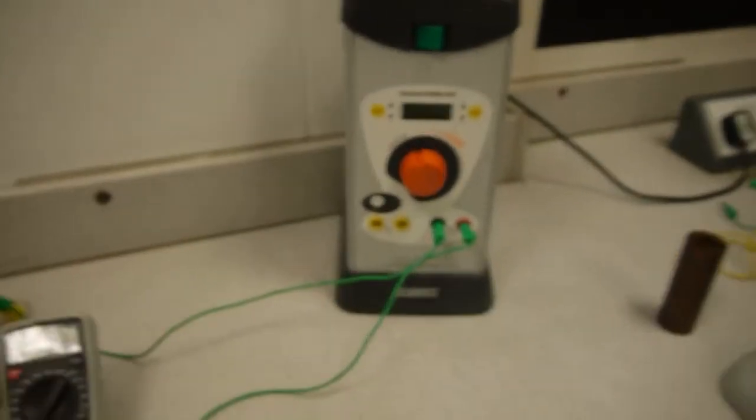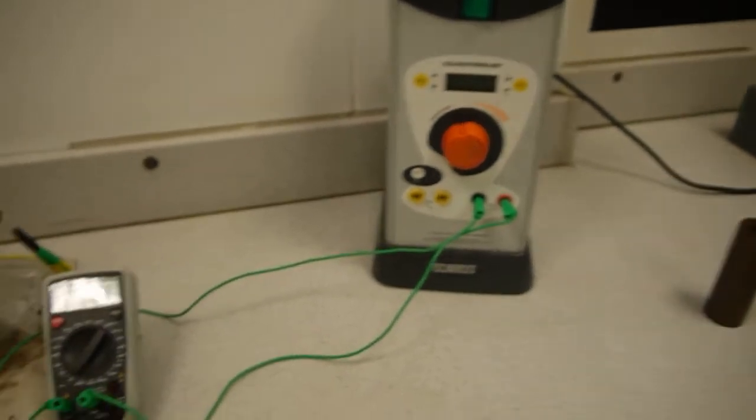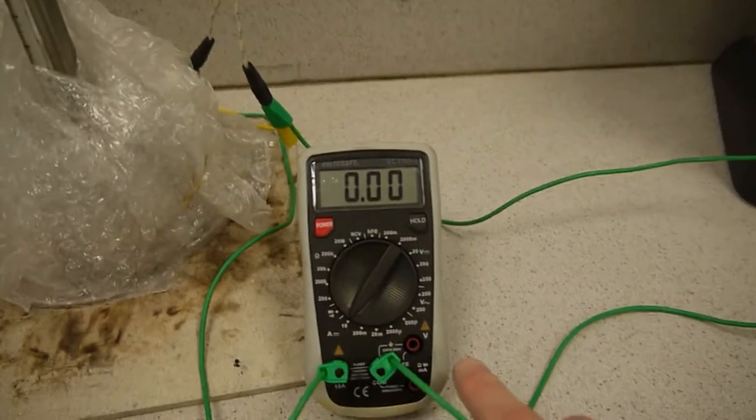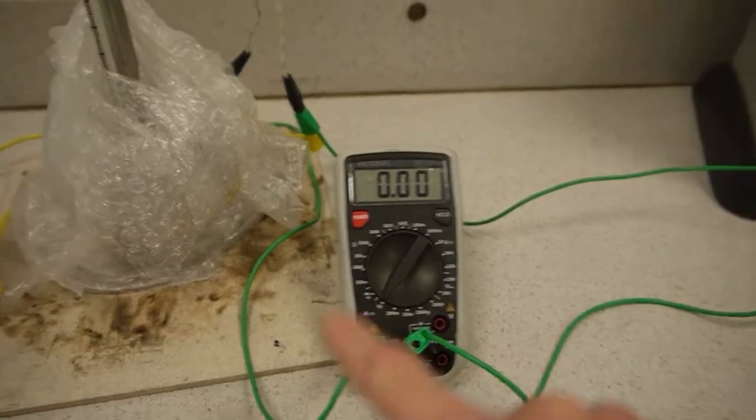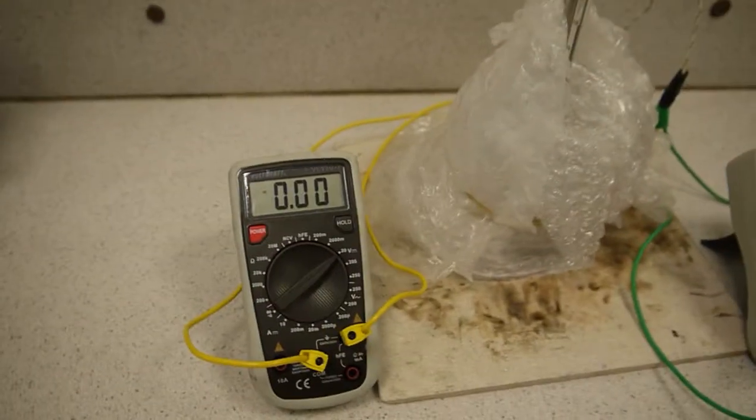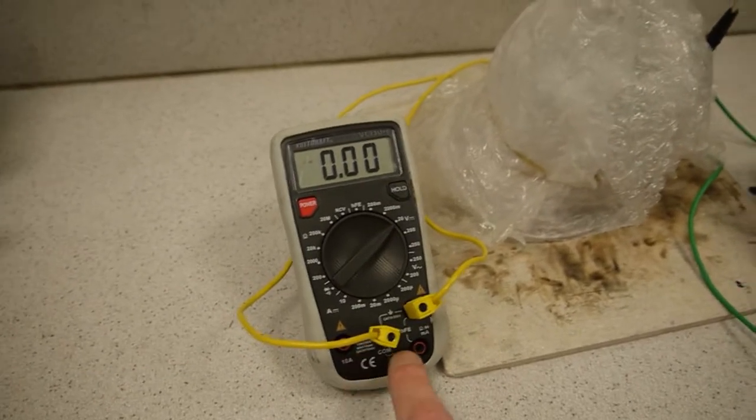I've got the whole circuit wired up now. I've got a multimeter here as my ammeter which is wired up in series with the circuit and I've got another multimeter over here as my voltmeter which is set up in parallel.